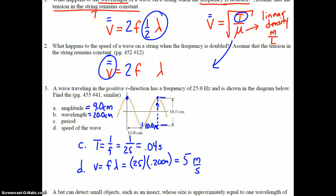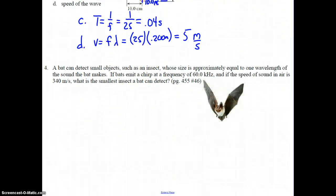Lastly, number four. A bat can detect small objects, such as an insect, whose size is approximately equal to one wavelength—that's one lambda. That's the size of the insects a bat can detect, based on the sound the bat makes. If the bat emits a chirp at a frequency of 60 kilohertz, and if the speed of sound in the air is 340 meters per second, what is the smallest insect a bat can detect?